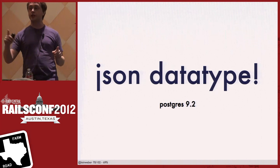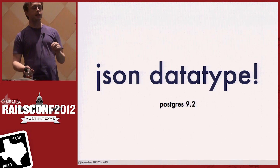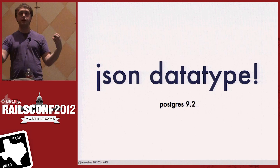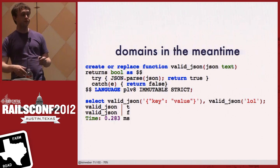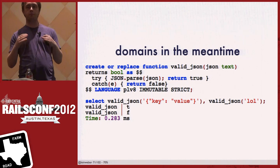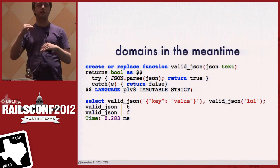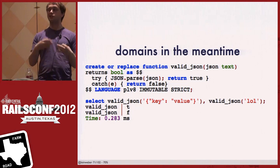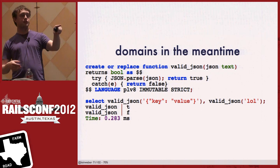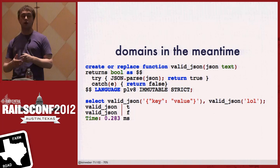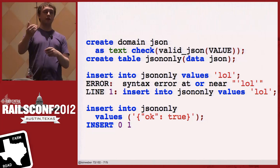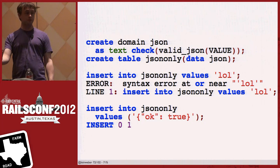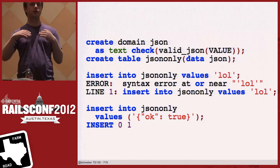The next version of Postgres — coming around September if release patterns hold — is going to have JSON as a native column type. In Postgres 9.2 you'll be able to declare a column as JSON and it will ensure proper JSON. In the meantime, you can use a Postgres feature called domains — like a poor man's data type. You make a PLV8 function that tries to parse the JSON; if it fails it returns false, if it succeeds it returns true. Then you create a domain with that function, and when you try to insert bad JSON, it won't let you.